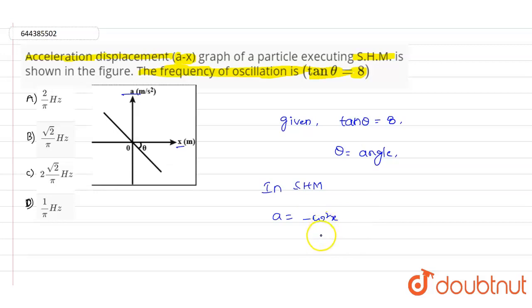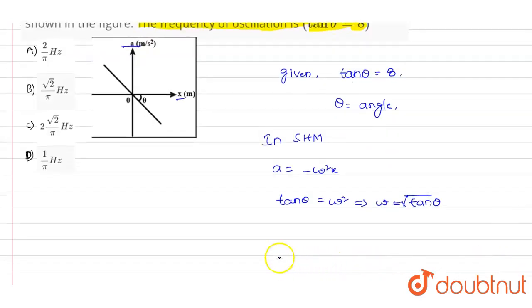Tan theta value will be equal to omega squared. So we will write 2πf equals square root of tan theta. Instead of omega, I have written 2πf, so that will equal square root of 8, because the value of tan theta we have as 8, which is given in the question.